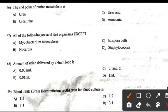The end product of urine metabolism is: Right answer is C: Uric acid.